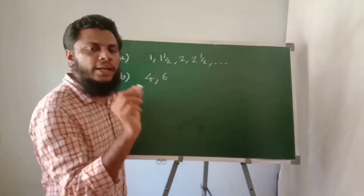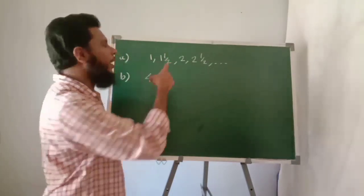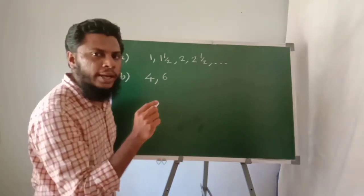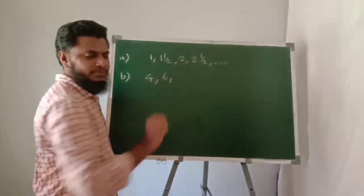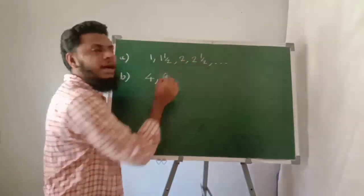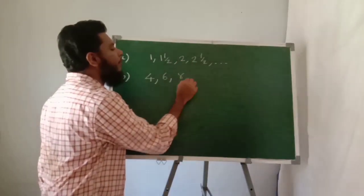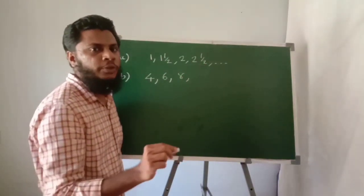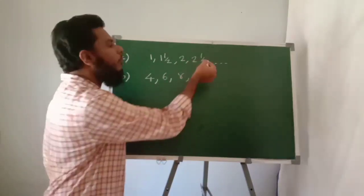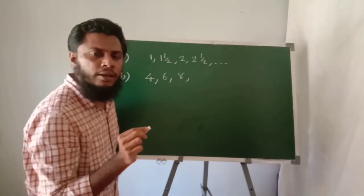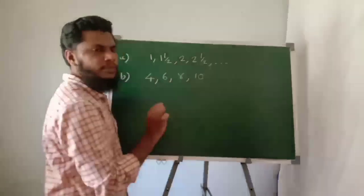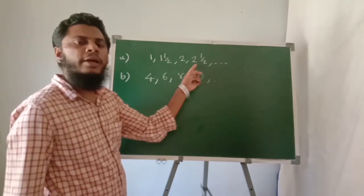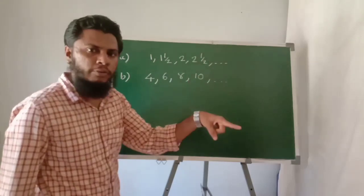4 times 1 and a half equals 6. When the square side is 2, the perimeter is 4 times 2 equals 8. Continuing: 4 times 2 and a half equals 10. That is the answer.